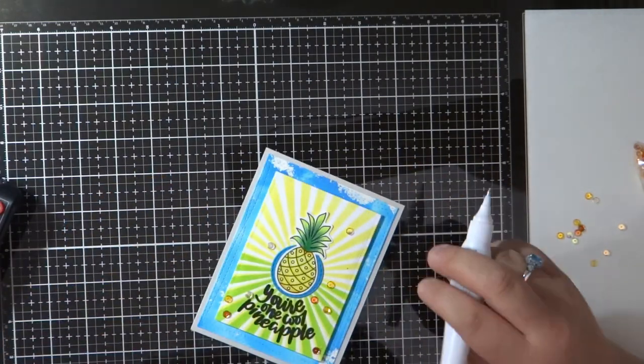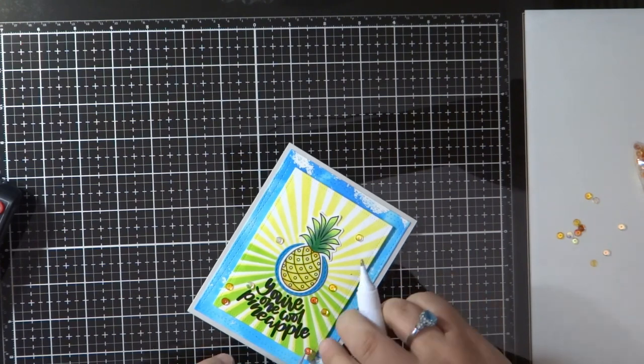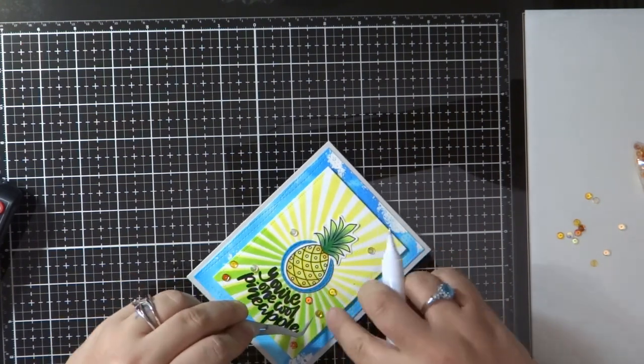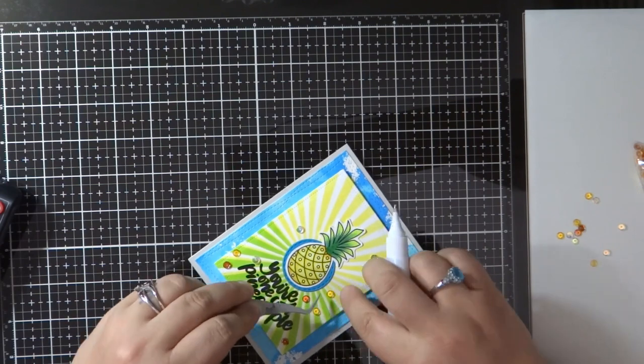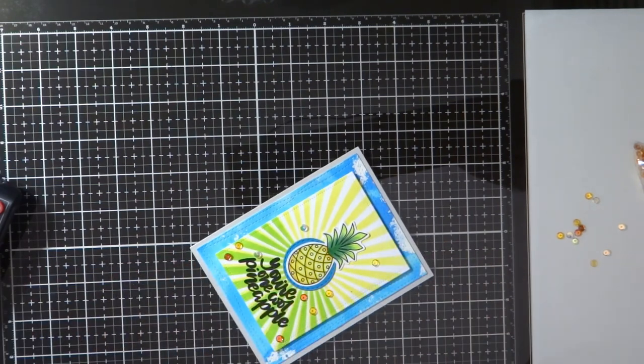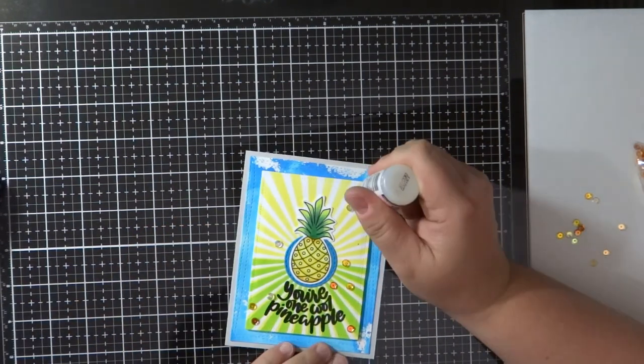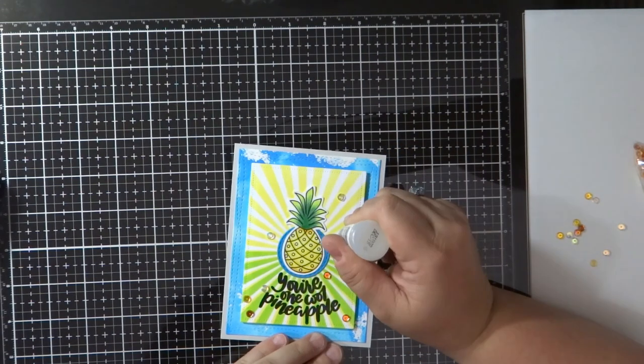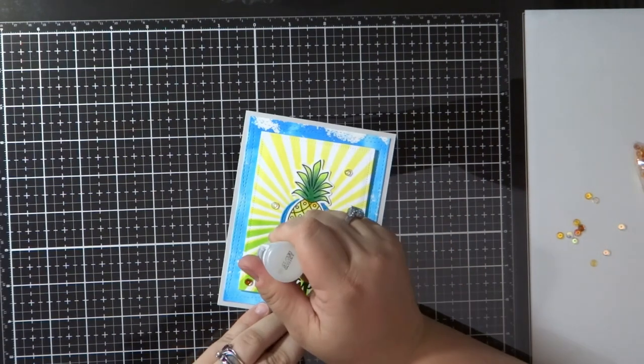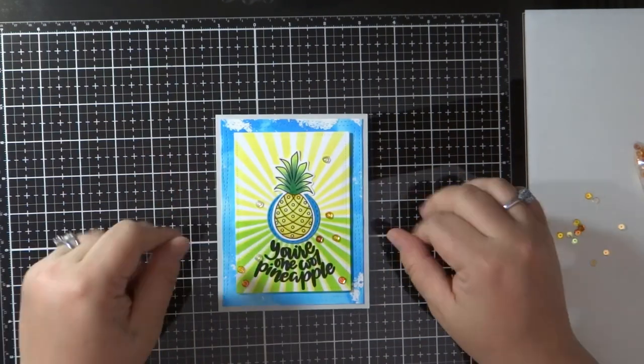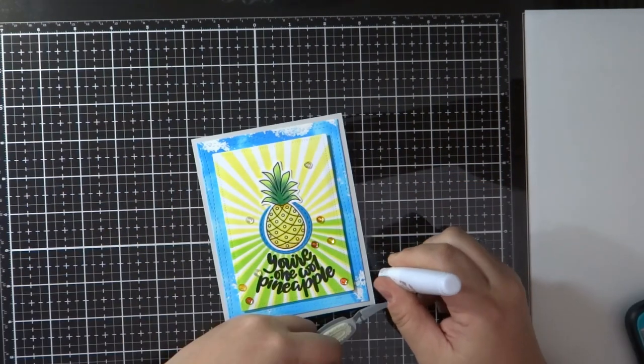What I like to do is just take a bunch of sequins and then kind of dump them or kind of drop them all over the panel that I want to put them on. And that'll give me like a guideline on where to stick them. I can remove ones that I don't want or ones that are covering places that I don't want to be there.